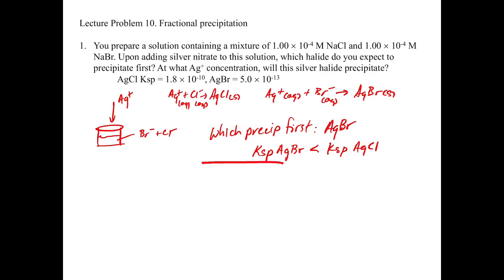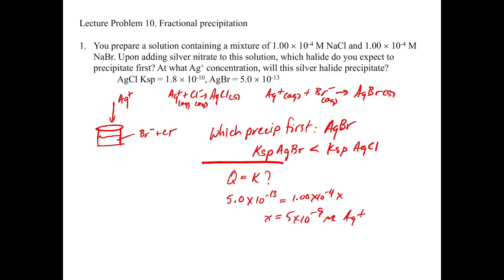The second part asks at what silver concentration will this halide precipitate. We need to find when Q equals KSP. Taking the KSP for AgBr and setting [Br⁻] = 1.00×10⁻⁴ M, we solve for [Ag⁺]: x = 5×10⁻⁹ M silver. That's how you calculate what concentration of silver causes precipitation.